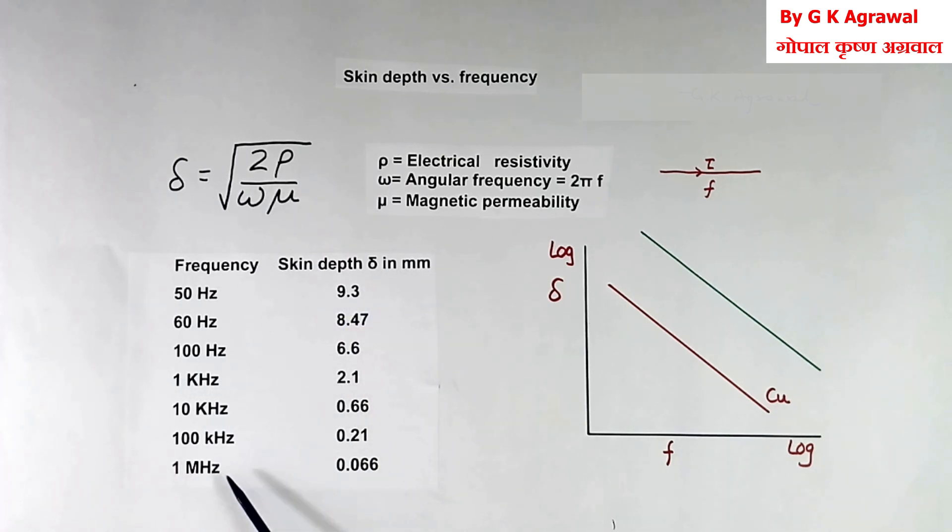But 1 MHz, it will be only 0.066 mm. It means at higher frequency, or very less area, current will flow. So resistance will be very high.